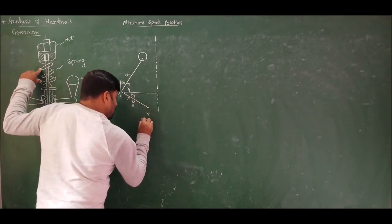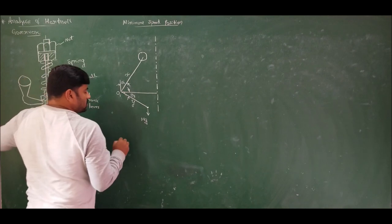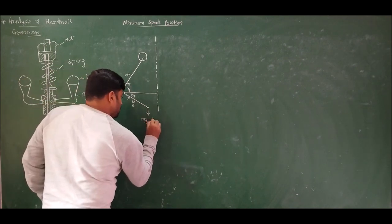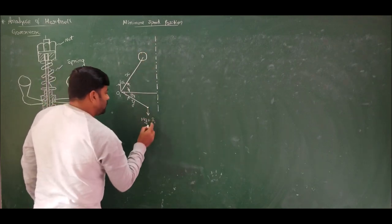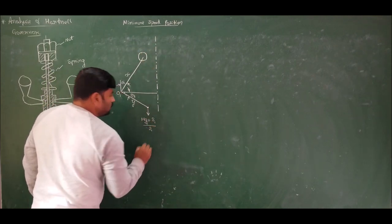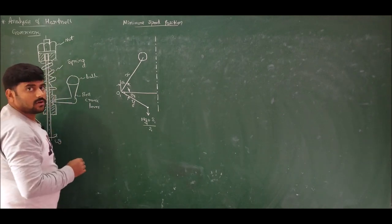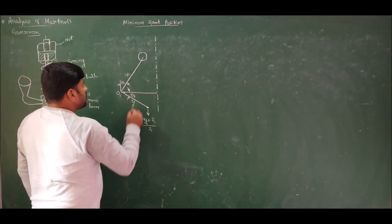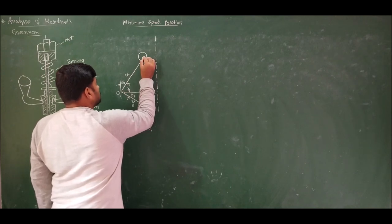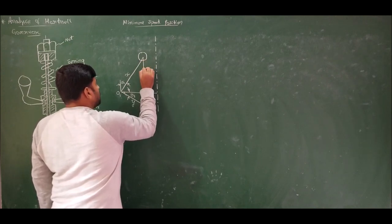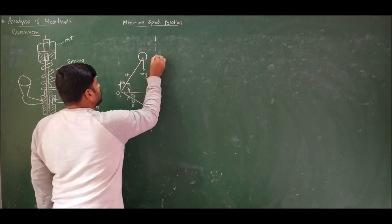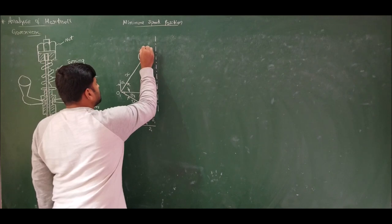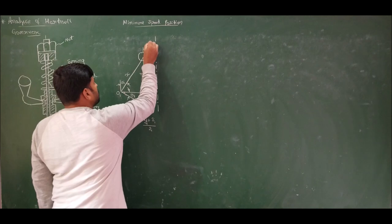Let us call the ball arm length as x and sleeve arm length as y. Let this angle be theta 1, so thereby this angle will also become theta 1, keeping the two arms at right angles to each other. The force acting here will be the mass of the sleeve, capital M, so weight will be Mg plus spring load at minimum speed S1. This must be divided by 2 because we are taking only half of the Hartnell governor for analysis.